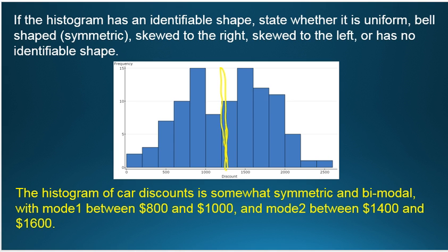It means there's two modes, two most frequent categories that are separated from one another. So the response to item four on interpreting the histogram, the histogram of card discounts is somewhat symmetric and bimodal,